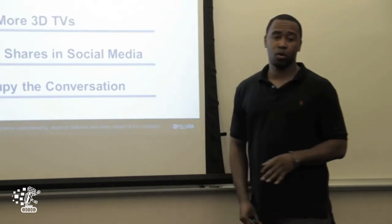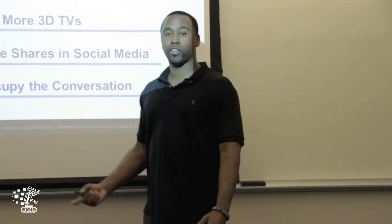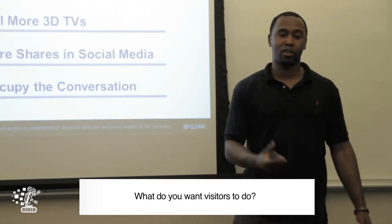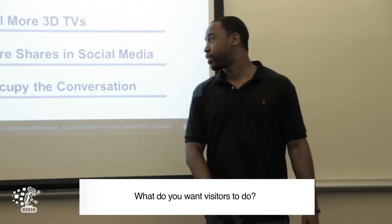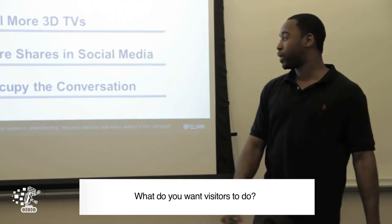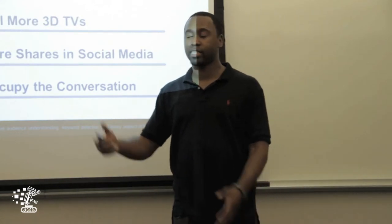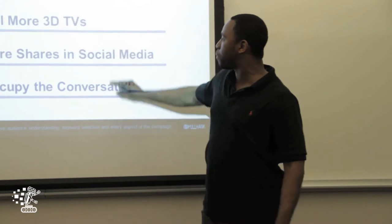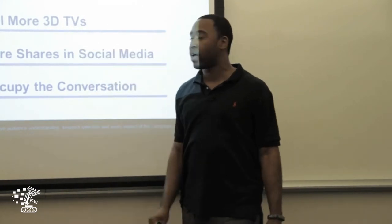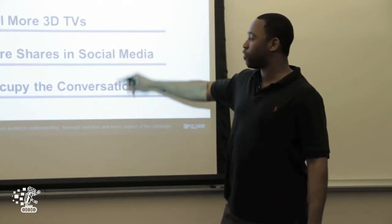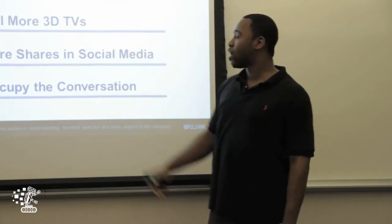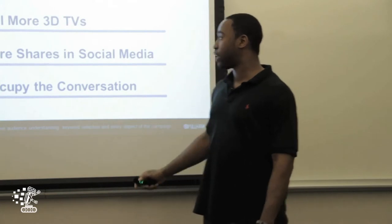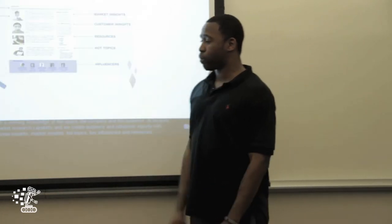Business goals are the most important part — what are you trying to do when people land on your website? In this case, let's say we're talking about LG: sell more 3D TVs, get more shares in social media, occupy more of the conversation. These two can be intermediate goals to hitting number one, but they're easy to measure. So if we get more of these, we know we're going to get more of those. When we do our measurement planning, we lay this out and show how we would measure that.